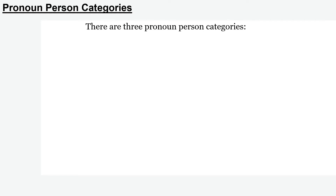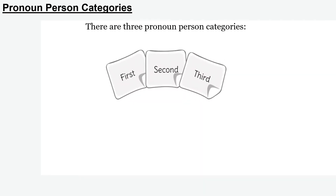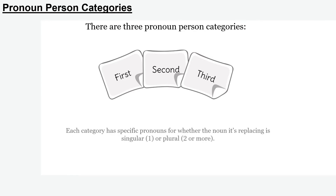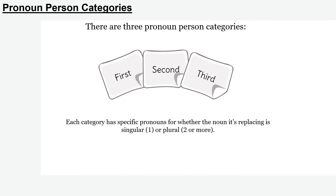For this lesson, we also need to understand person categories. There are three person categories: first person, second person, and third person. You've probably heard this mentioned in your literacy classes before. Each category — first person, second person, and third person — has specific pronouns that we use, whether the noun it's replacing is singular, meaning just one thing, or plural, meaning two or more.